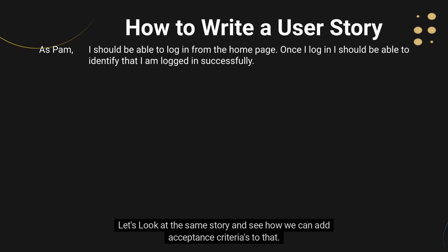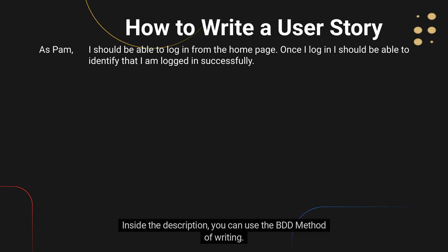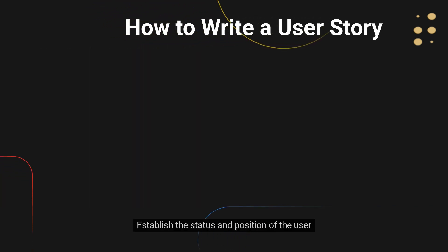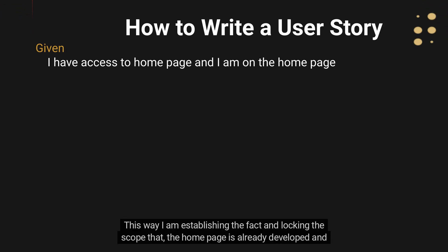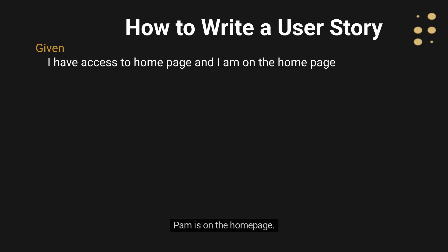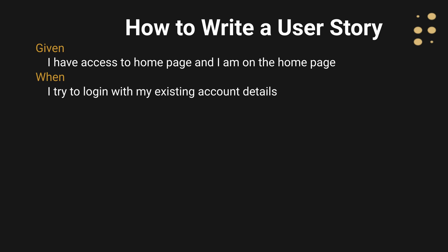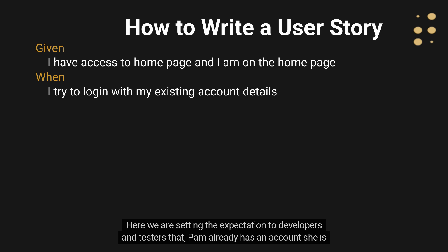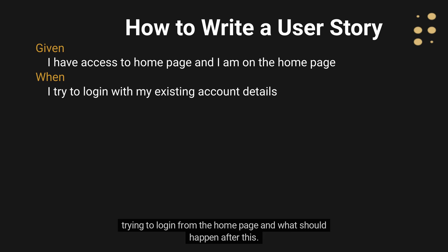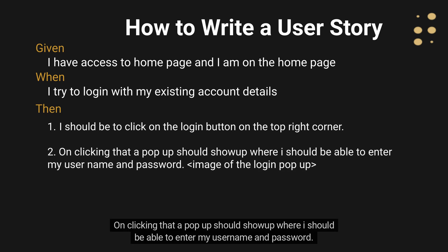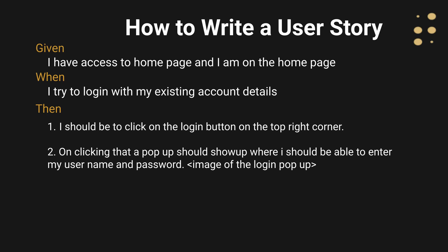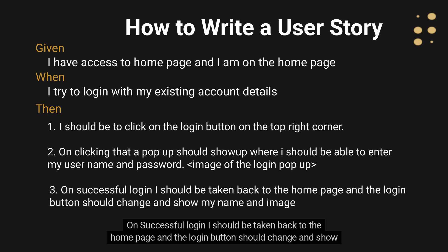Let's look at the same story and see how we can add acceptance criteria to that. Inside the description, you can use the BDD method of writing. Establish the status and position of the user: Given I have access to the home page and I am on the home page. This way, I am establishing the fact and locking the scope that the home page is already developed and Pam is on the home page. Now we explain what Pam is trying to do: when I try to log in with my existing account details. Then, I should be able to click on the login button on the top right corner. On clicking that, a pop-up should show up where I should be able to enter my username and password. You can even attach the image of the login pop-up. On successful login, I should be taken back to the home page and the login button should change and show my name and image.